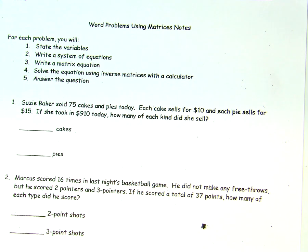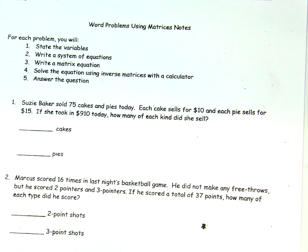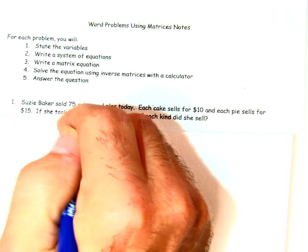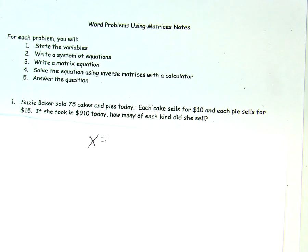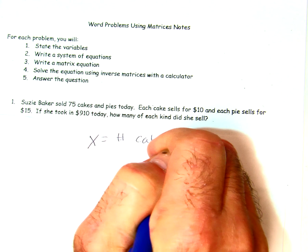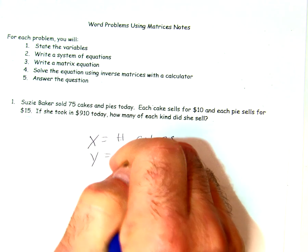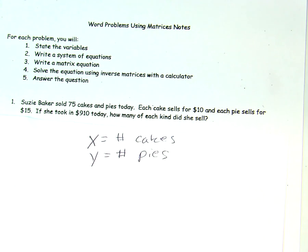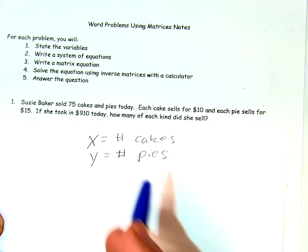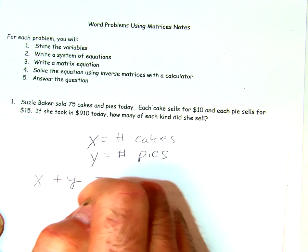We want to state the variables. So here we have cakes and pies, and I'm going to make x equal to the number of cakes, and I'm going to let y be the number of pies. Once we have done that, we can set up our equations. They say we have a total number of 75 cakes and pies, so x plus y equals 75.